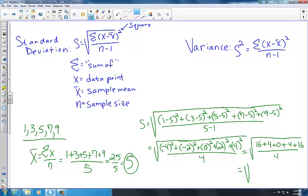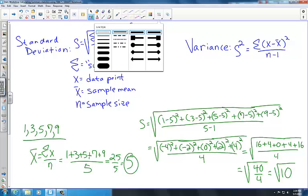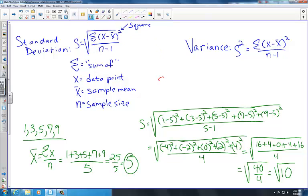If we simplify further by adding all the values in the numerator of our fraction, we get 40 divided by 4, which is equal to the square root of 10. So our standard deviation is the square root of 10. It's more common to take the square root and express it in decimal form. So I'll say the square root of 10 is approximately equal to 3.16. And this is our standard deviation.